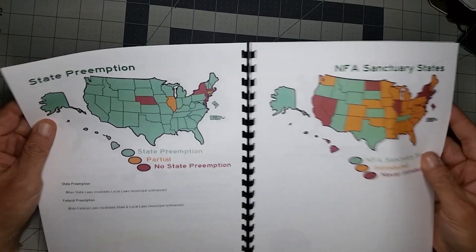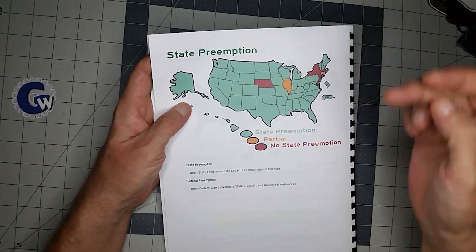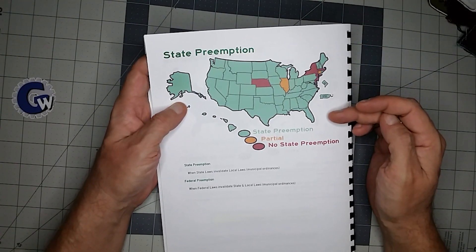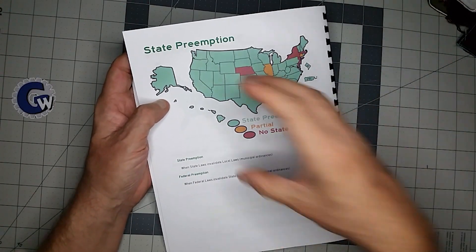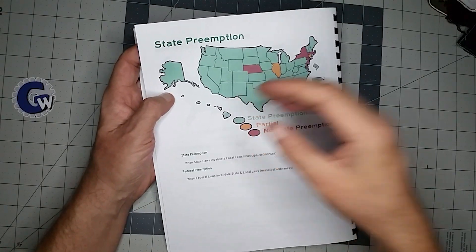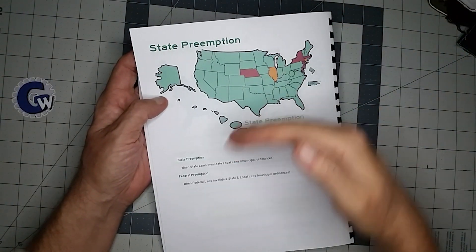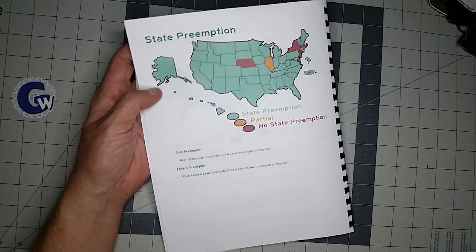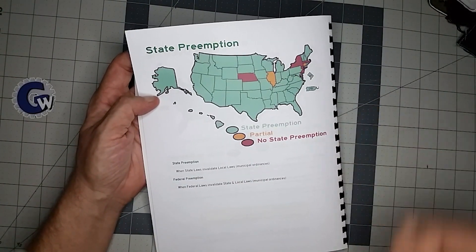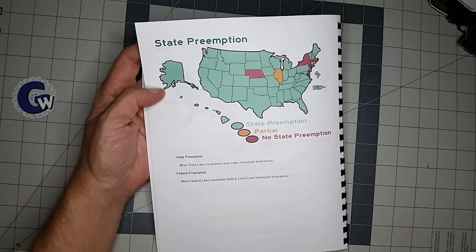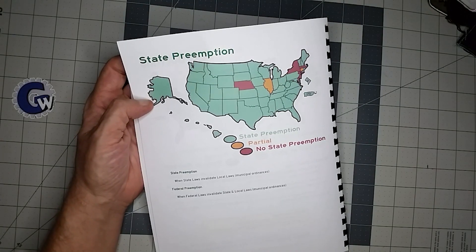Next up is state preemption. State preemption means state rights supersede local rights. Typically we have federal preemption where federal law overrides state law. You can also have state preemption where state law overrides local municipalities, neighborhood associations, counties, or whatever jurisdictions might be within the state.